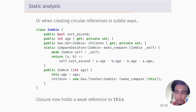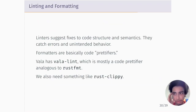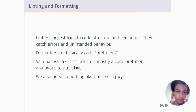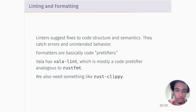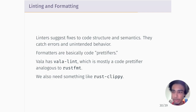We also want to think about how we can do linting and formatting better. Linters, as opposed to formatters, are more involved — they suggest fixes to code structure and semantics, and are there to catch unintended behavior, not just style. Formatters are basically code prettifiers that tell you about style. Vala has a nice tool called Vala Lint, but it's mostly just a code prettifier — like Rust format. I think we should also have something like Clippy, which is the linter for Rust.